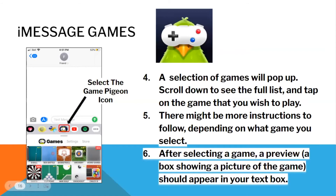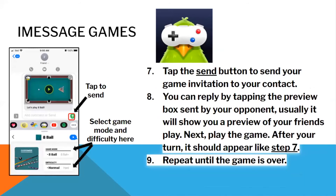When you select Game Pigeon, all the options of different games appear and you can tap on one to send it to your friend. A selection of games will pop up — scroll down to see the full list and tap on the game you wish to play. There may be more instructions depending on what game you select. After selecting a game, a preview box showing a picture of the game should appear in your text box. Tap the Send button to send the game invitation to your contact. Your friend can reply by tapping the preview box. It will show you a preview of your friend's play. After your turn, repeat until the game is over.